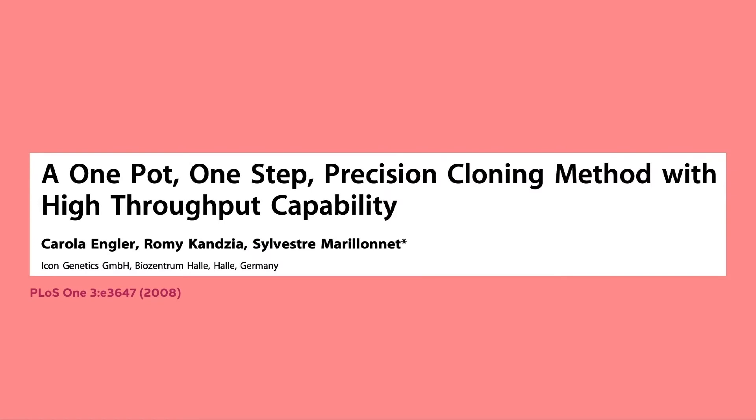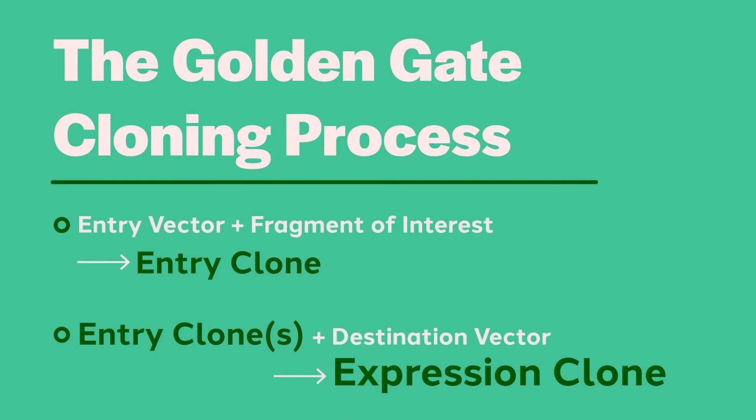Golden Gate cloning was first described by Engler et al. in 2008. It is described as a one-pot, one-step precision cloning method, where restriction enzyme and ligase are co-incubated. In developing and describing their system, the authors chose to reuse some of the terms used for Gateway cloning. These are entry vector, entry clone, destination vector, and expression clone.